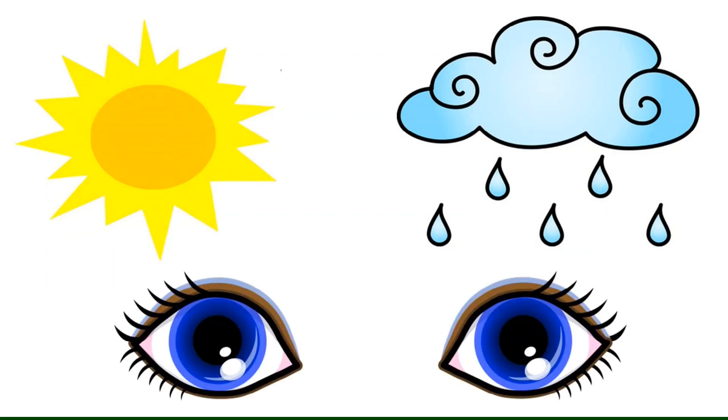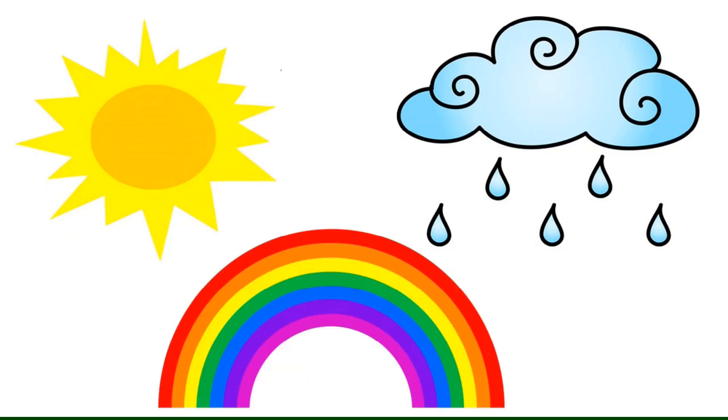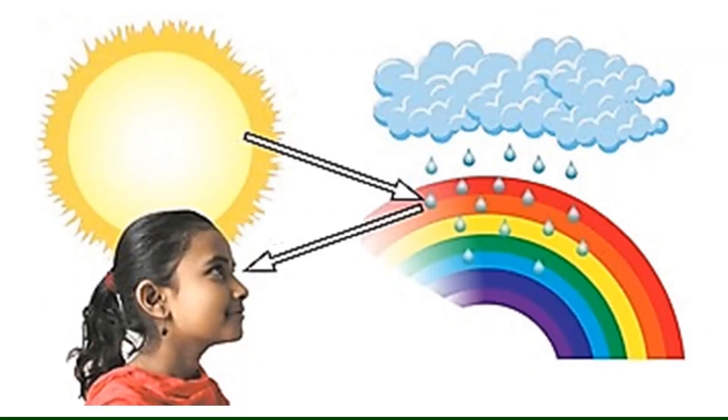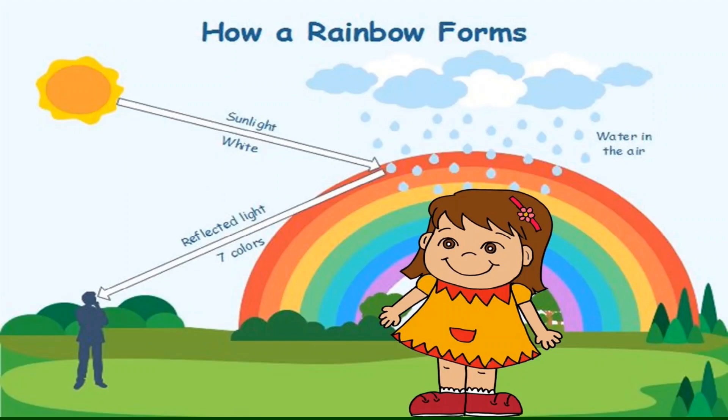And then you look at them with your eyes, and together when they're mixed you see a rainbow. So look, a rainbow isn't real, it's just something we see with our eyes. You can't touch it. That's how you make a rainbow.